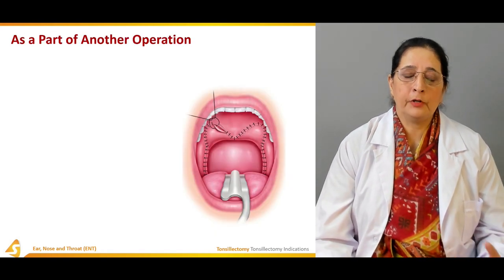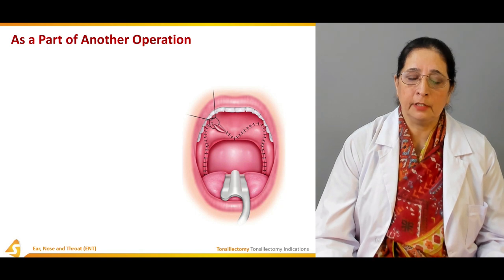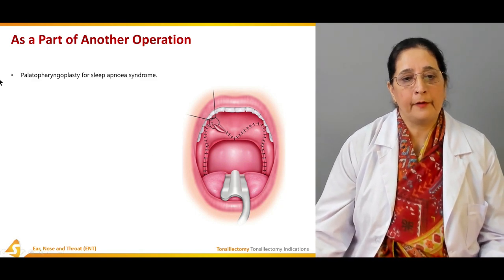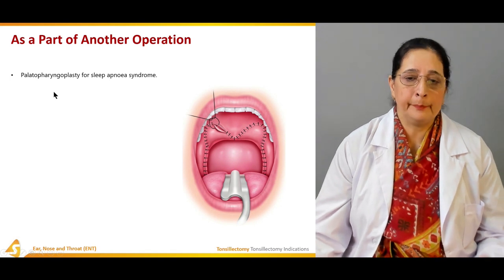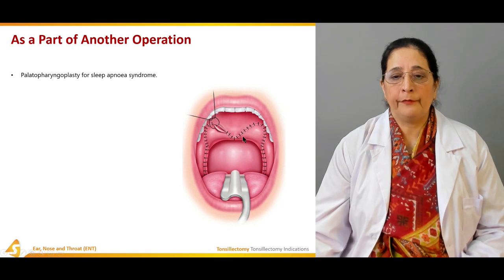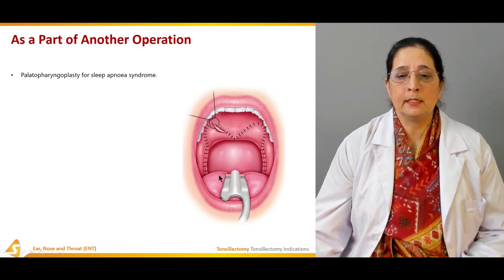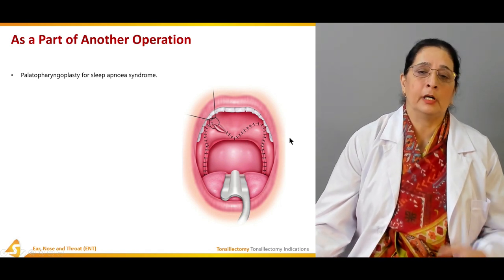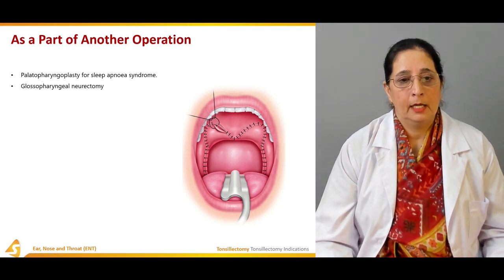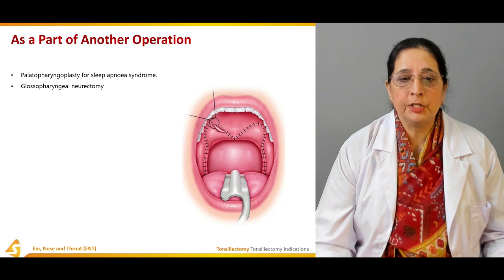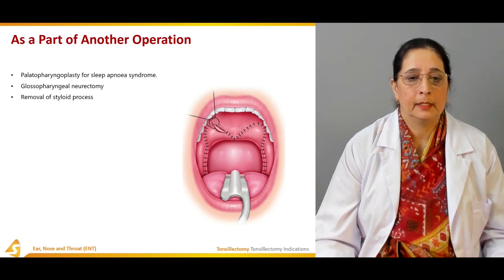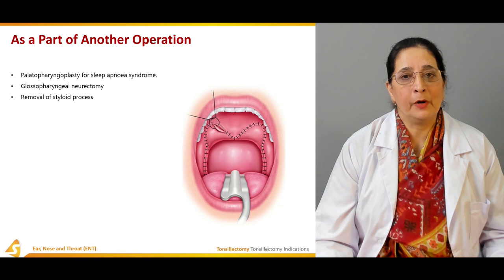Tonsillectomy is also performed as part of another operation. These include palatopharyngoplasty — repair of the palate and the pharynx — as part of which tonsillectomy needs to be done. Other procedures include glossopharyngoplasty, glossopharyngeal neurotomy, and removal of the styloid process.